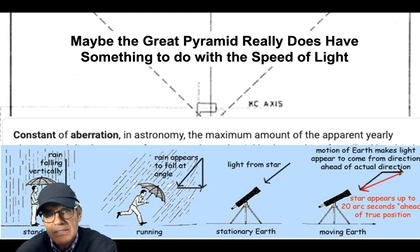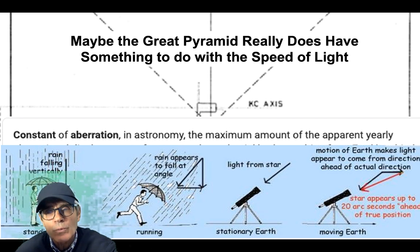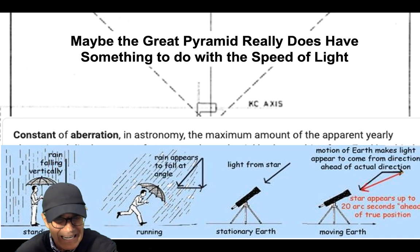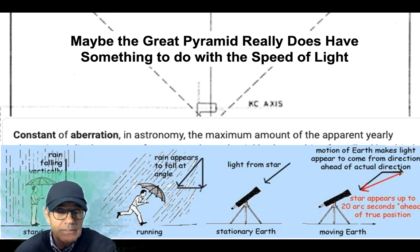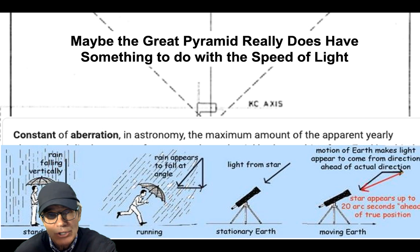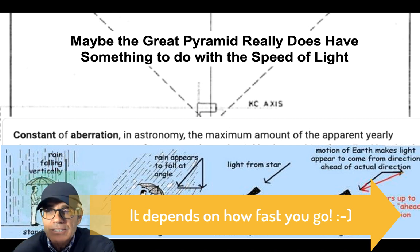To explain what this is: if you're standing with an umbrella over you in the rain and the rain's falling straight down, if you start running it's going to be as if the rain is coming down at an angle. I used to take my convertible out for a ride in the rain and you don't get hit by the rain because the windshield sort of shields you. That's an analogy to compare to a telescope.